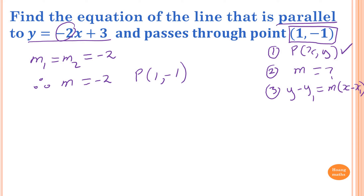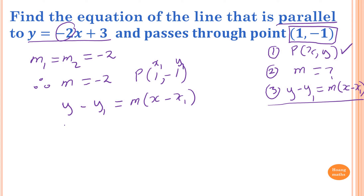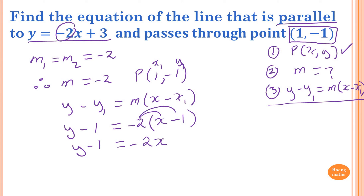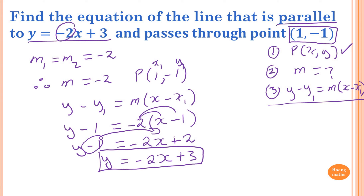Now using the point-gradient formula y - y1 = m(x - x1), with x1 = 1, y1 = -1, and m = -2: y - (-1) = -2(x - 1), so y - 1 = -2x - 2 × (-1), which gives y - 1 = -2x + 2. Moving the 1 to the other side: y = -2x + 3. That is the equation of the line with the same gradient passing through the point (1, -1).